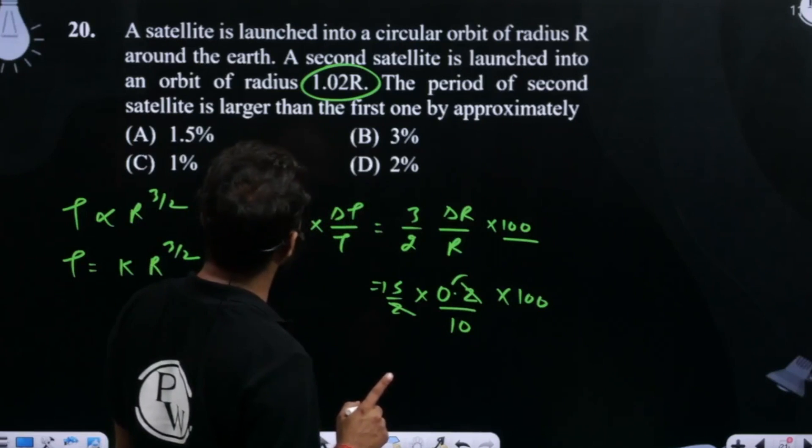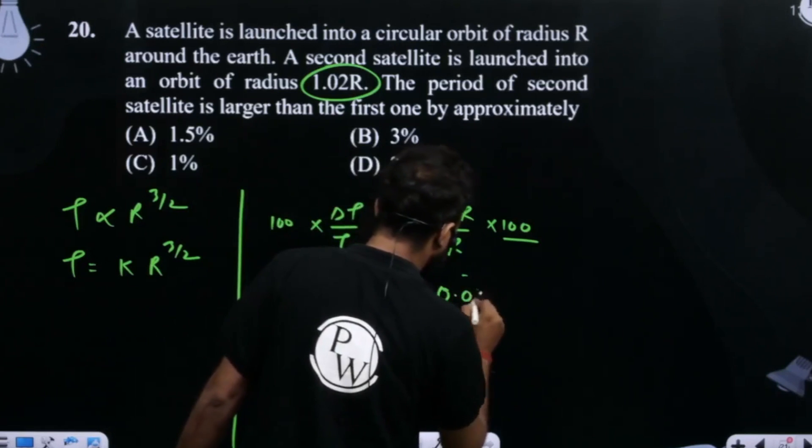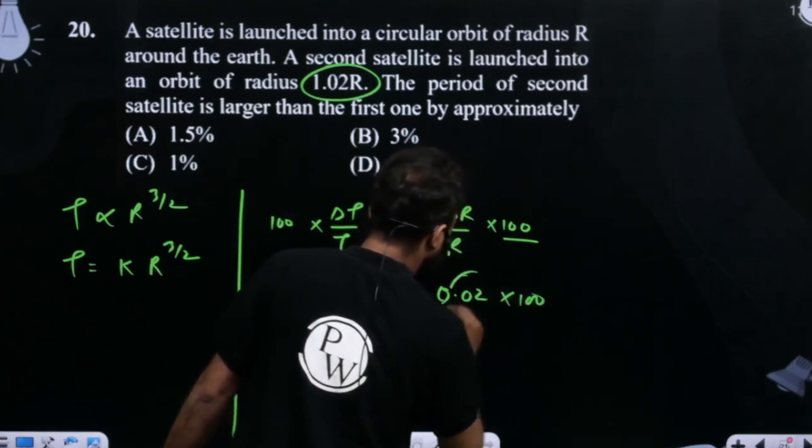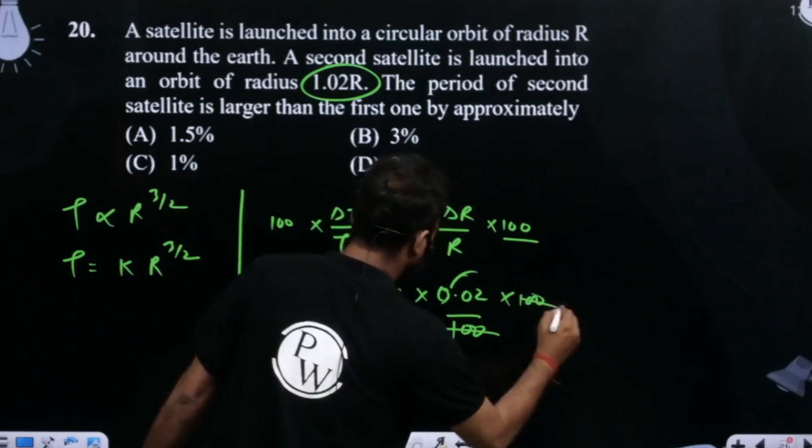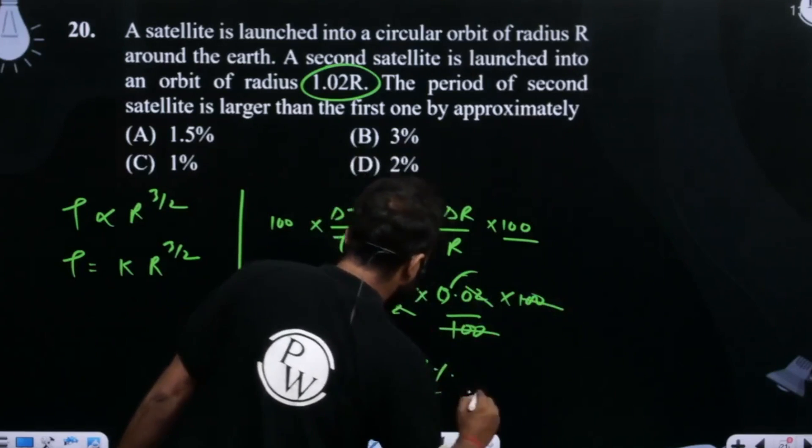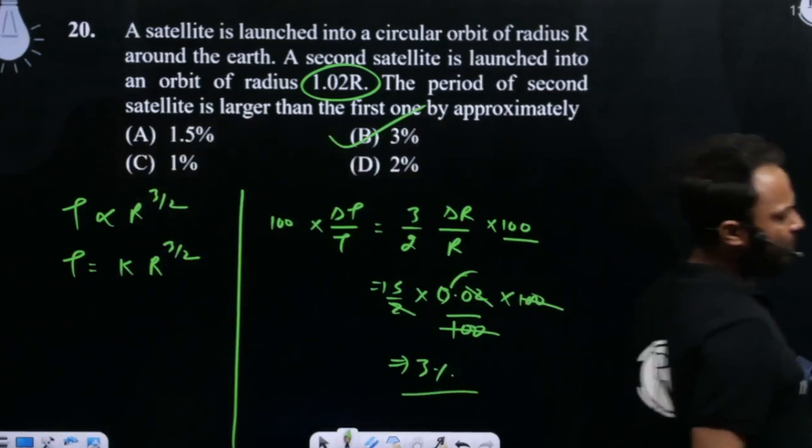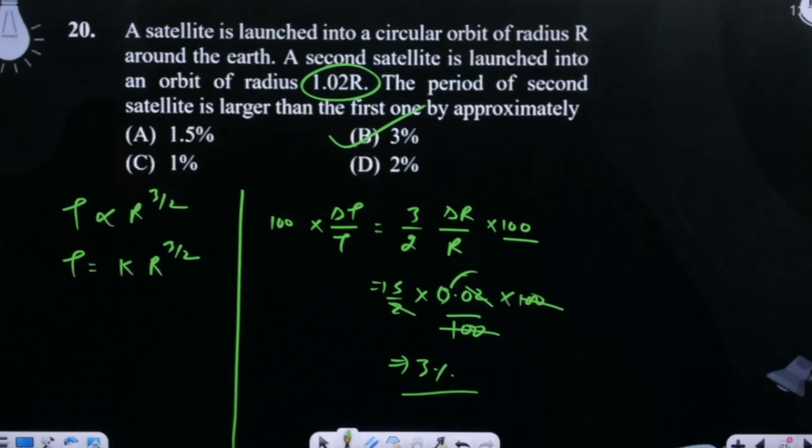It should be 0.02, not 0.2. So (3/2) × 0.02 × 100 - if I take this here, 20 and 100 cancel to give 5, then 2 and 2 cancel out. The change in time period will be 3% only, which is option B. Option B is the correct answer.